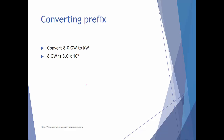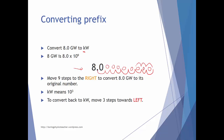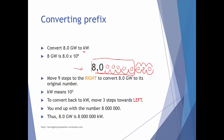Big prefixes use exactly the same method: convert to the original number, then convert to the required prefix. For big prefixes, you jump towards the right first. Converting 8 gigawatts to kilowatts: giga is 10 to the power 9, so move nine places to the right — one through nine — giving a very large number. Then kilo is 10 to the power 3, so move three places to the left — one, two, three — leaving six zeros, or eight million. So 8 gigawatts equals 8,000,000 kilowatts.